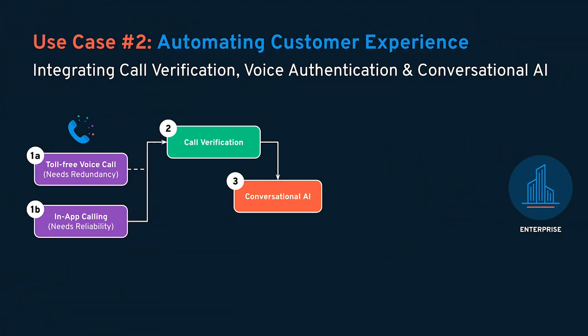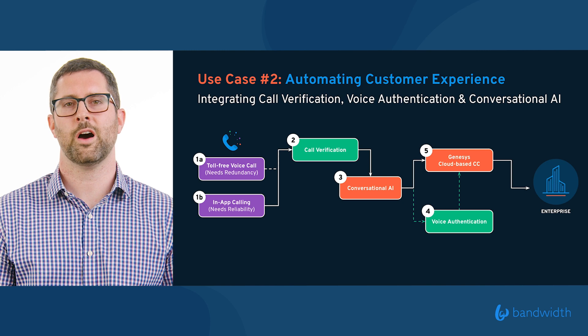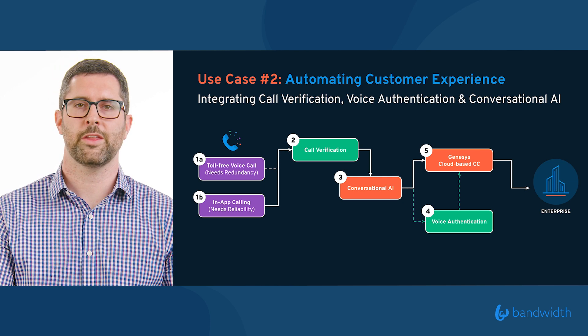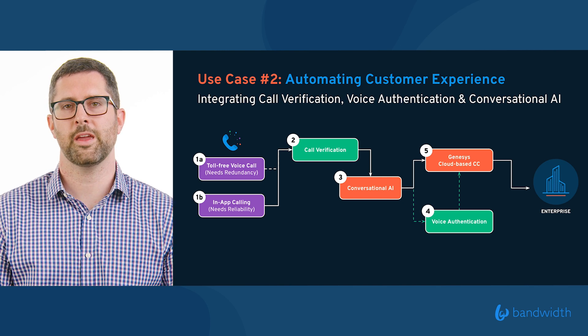But things don't always end at conversational AI. In a high-stakes scenario like a financial institution, we may need to add a capability on its way to a human-based contact center. In this example, we're using Genesys Cloud CX, a cloud-based contact center CCaaS, and also integrating voice biometric authentication — identifying whether this is really the person calling and providing that authentication level downstream into the contact center, where the real agent can see the information on their screen. All of this — pre-authentication, conversational AI, call verification, and passing the call to a human agent — allows an enterprise to automate as much of the customer experience as possible while still delivering high-quality customer experience along the way.